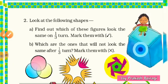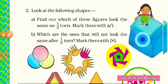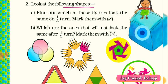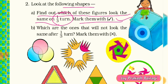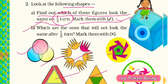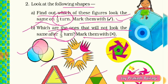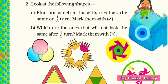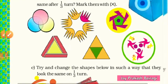In the next page we have the second question: look at the following shapes. Find out which of these figures look the same on one third turn — mark them with a tick. And in the second part, which are the ones that will not look the same after one third turn — mark them with a cross. Now come to the shapes.